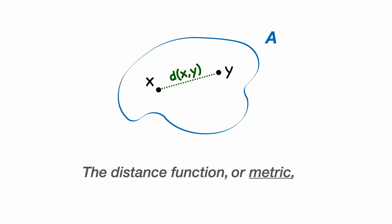So this distance function, which is sometimes called a metric, needs to satisfy four criteria in order to qualify as a distance function for a metric space. Firstly, it can't be negative.